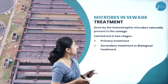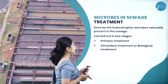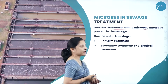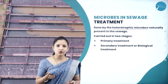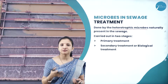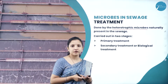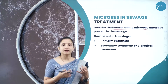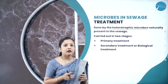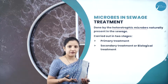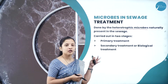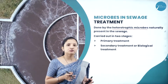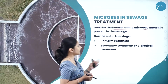Sewage treatment can usually be done by heterotrophic microbes — microorganisms which depend on other organisms for their survival. These heterotrophic microbes are naturally present in the sewage, but their culture can actually be increased during the sewage treatment process itself, through a number of ways.